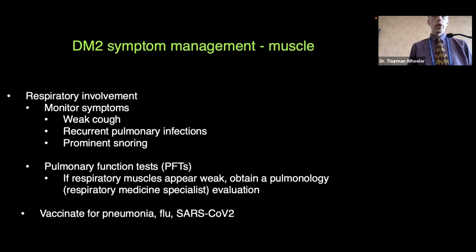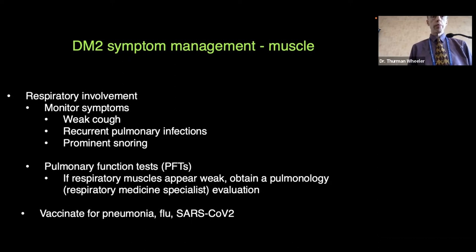For respiratory involvement, monitor for symptoms such as weak cough, recurrent pulmonary infections, and prominent snoring. If these symptoms occur, pulmonary function tests can help identify weak respiratory muscles. If weakness is identified, obtaining a pulmonology evaluation — a respiratory medicine specialist — would be helpful. It's also important to vaccinate for pneumonia, flu, and SARS-CoV-2 to help reduce the likelihood of a severe infection if the muscles are unable to clear secretions.